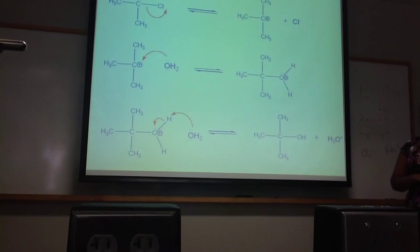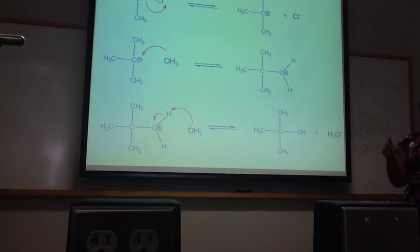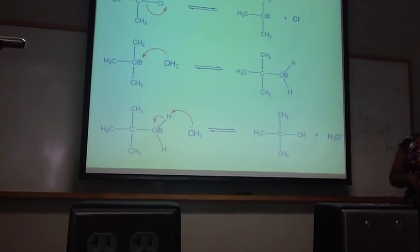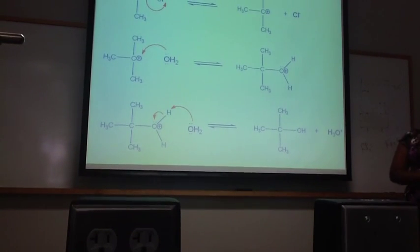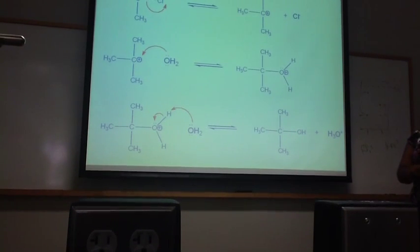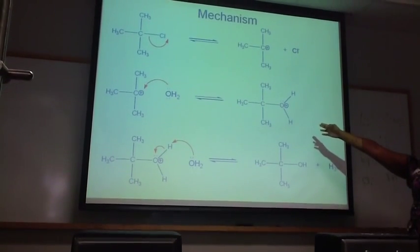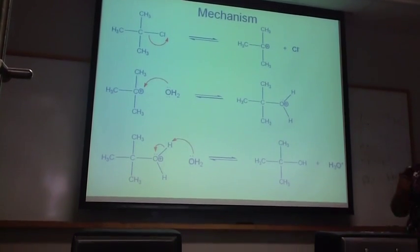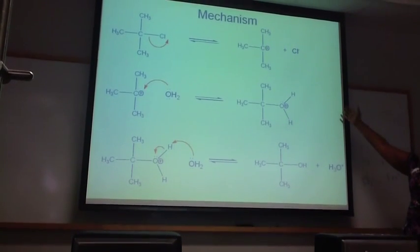And in SN2, what happens is you don't form a carbocation. You would have a direct attack all in one step, and your chloride would leave at the same time. Okay? So you will learn more about that in your lectures. I'm just kind of giving you a heads up. But let's talk about this mechanism in more detail. So when you're drawing arrows, make sure that you have the tail of the arrow starting between half of the C-Cl bond, and then the arrow is showing towards chlorine, which tells me that the electrons are going from the bond to the chlorine, and that's why your chlorine will have a negative charge.